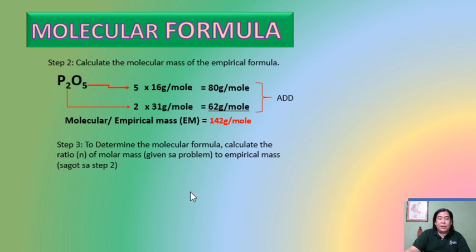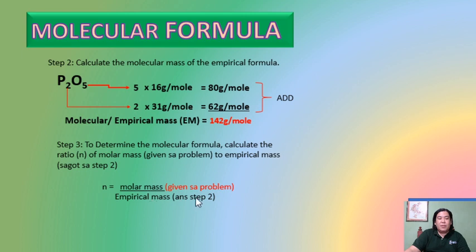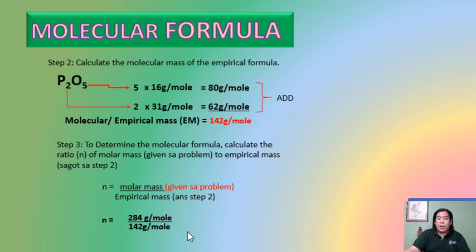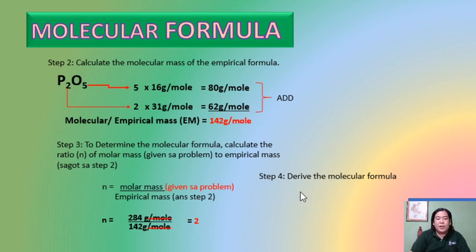For step 3, determine the molecular formula by calculating the ratio n of molar mass to empirical mass. n equals molar mass divided by empirical mass. The molar mass is 284 g/mol (given in the problem) divided by the empirical mass of 142 g/mol. Cancel the units and you obtain n = 2.